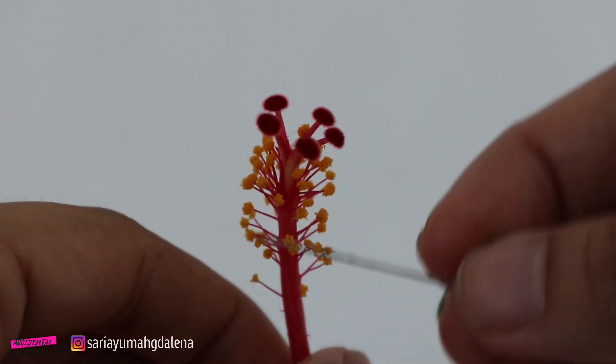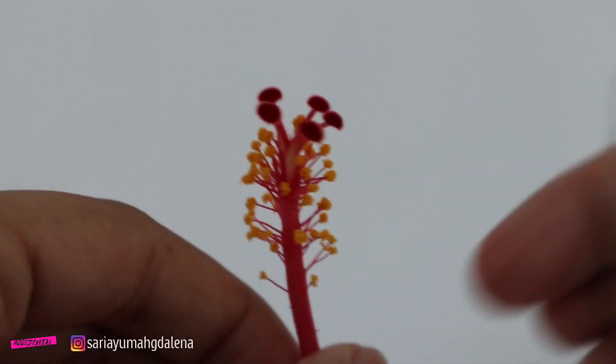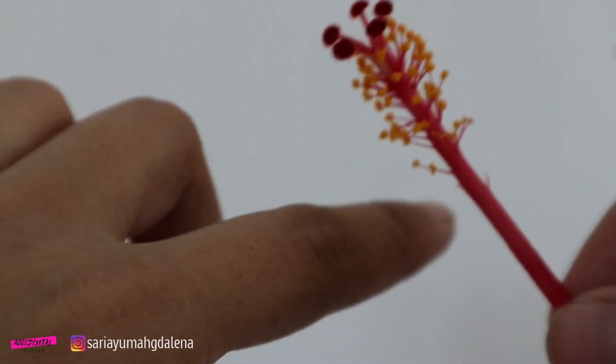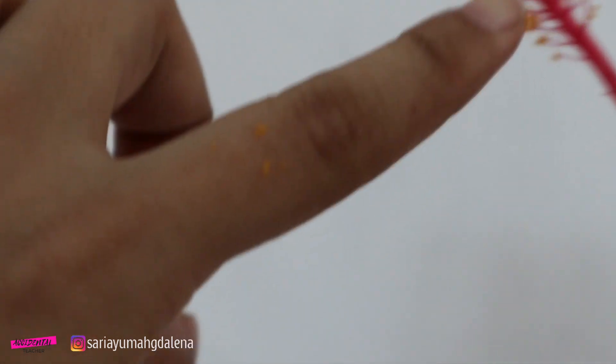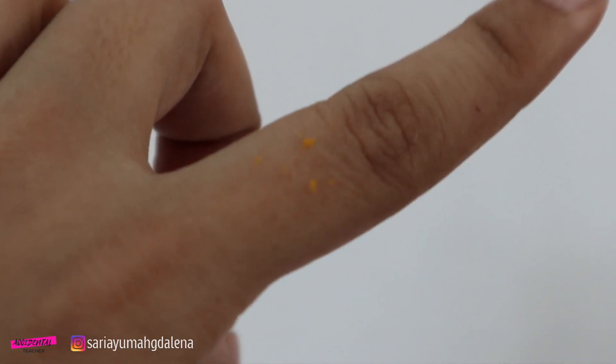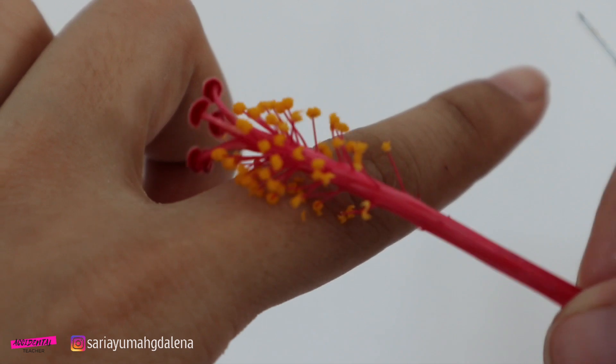The yellow parts here are pollen grains. Pollen grains are the yellow dusty substance found on the anther. They contain the male reproductive parts of the flowers.